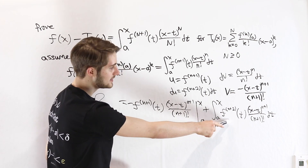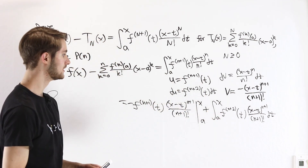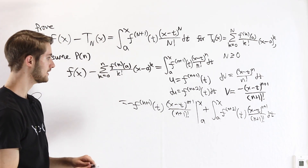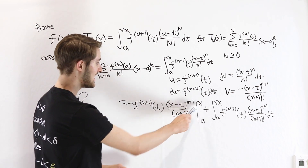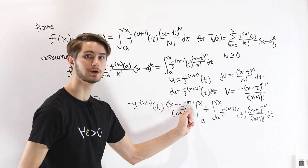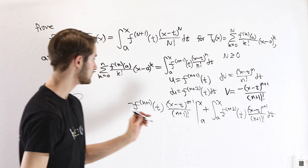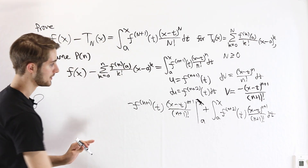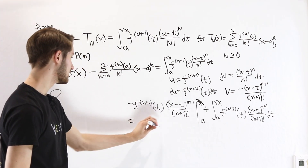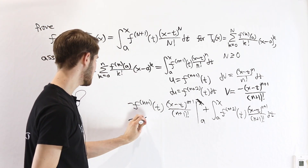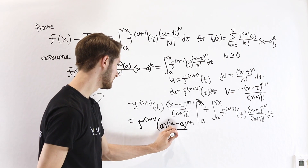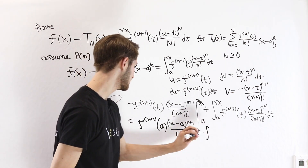This integral is exactly what we need for our inductive hypothesis. Now we look at the boundary term. The upper bound is x: plugging x into (x minus t)^(n+1) gives (x minus x)^(n+1), which is zero to some power — zero. So the upper bound cancels. For the lower bound we plug in a, and the two negatives combine to give a plus. So we get f^(n+1)(a) times (x minus a)^(n+1) over (n+1) factorial, plus the integral we had before.